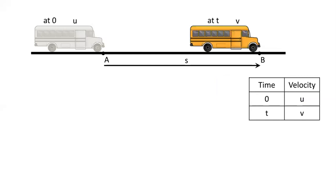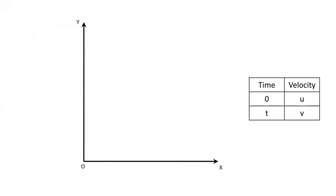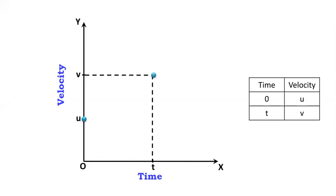At time zero, the velocity was U — that is initial velocity. And when the time was T, then the body's velocity changed and became V. So I have time versus velocity: time on the x-axis, velocity on the y-axis. Final velocity is more. When the time was zero the velocity was U, and when the time was T the velocity became V. I joined U and V with a line — I get a straight line, because it is a uniformly accelerated motion.